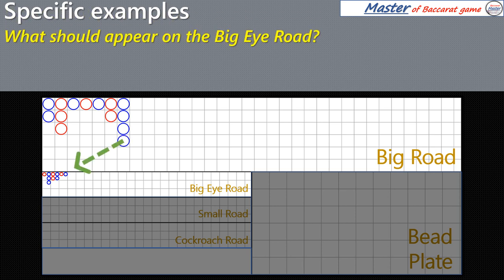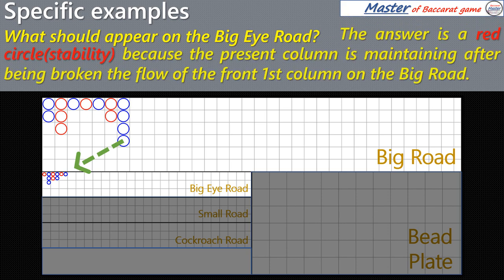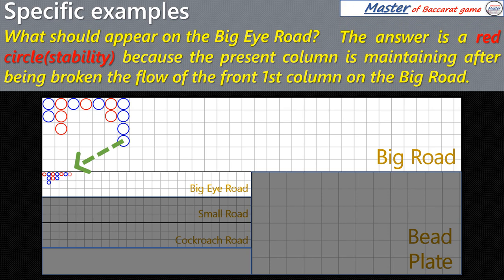What should appear on the Big Eye Road? The answer is a red circle, because the present column is maintaining after being broken the flow of the front first column on the Big Road.